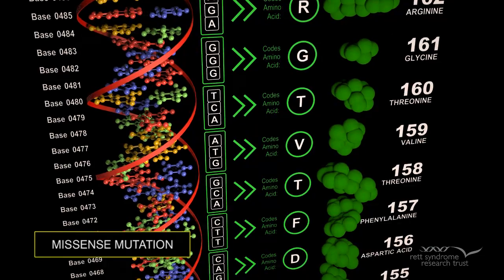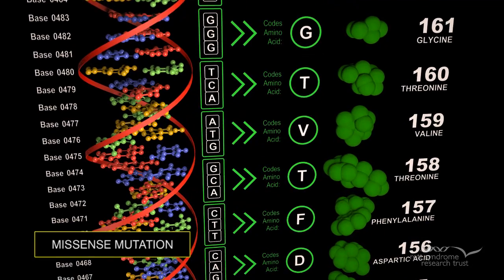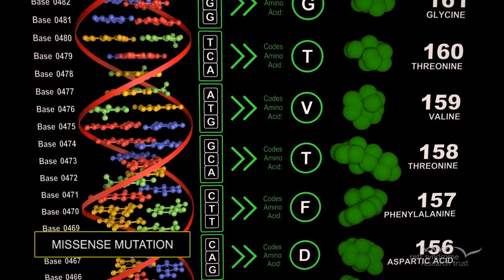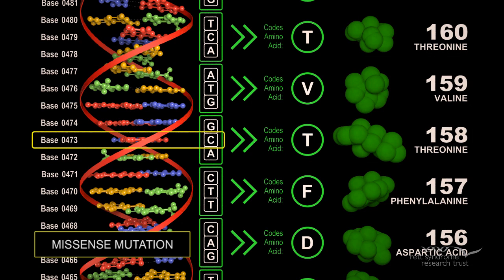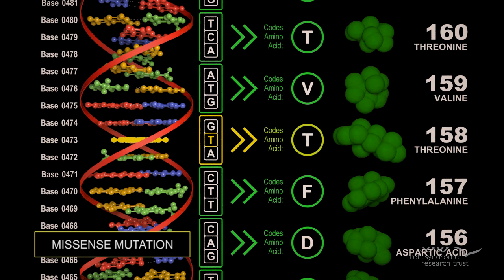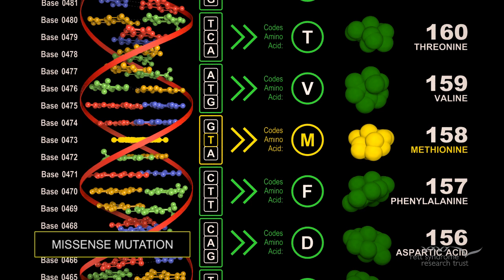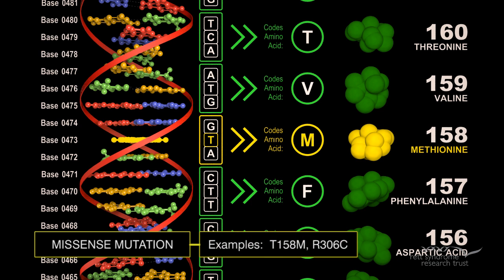Missense mutation: this type of mutation is a change in one DNA base pair that results in the substitution of one amino acid for another. For example, in the most common Rett mutation at base 473, there should have been a C base, but due to the mutation there is now a T. This results in a different amino acid being encoded. At amino acid number 158, there should have been a threonine, but now there is a methionine. The name for this mutation is known as T158M. This simple change of only one amino acid out of almost 500 amino acids makes the protein dysfunctional.